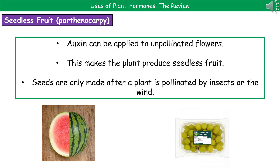The next use of our hormones is in producing seedless fruit, or a process called parthenocarpy. What we do here is apply auxin to unpollinated flowers, and as a result, it makes them produce fruit. Because they haven't been pollinated, they won't produce seeds. So you can get your seedless grapes and seedless melons, which obviously some people prefer to eat, because we've used the auxin to trigger fruit development without the need for pollination.